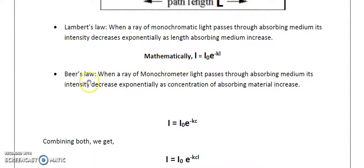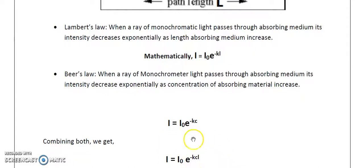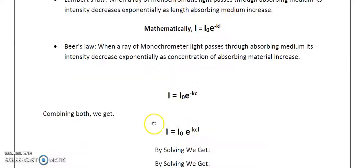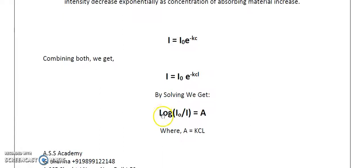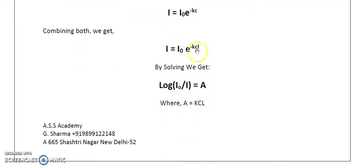Beer's law states that when a ray of monochromatic light passes through an absorbing medium, its intensity decreases exponentially as the concentration of the absorbing medium increases. Mathematically: I = I₀ × e^(−Kc), where K is the molar extinction coefficient and c is the concentration. Combining both laws gives the Beer-Lambert law: I = I₀ × e^(−KCl).